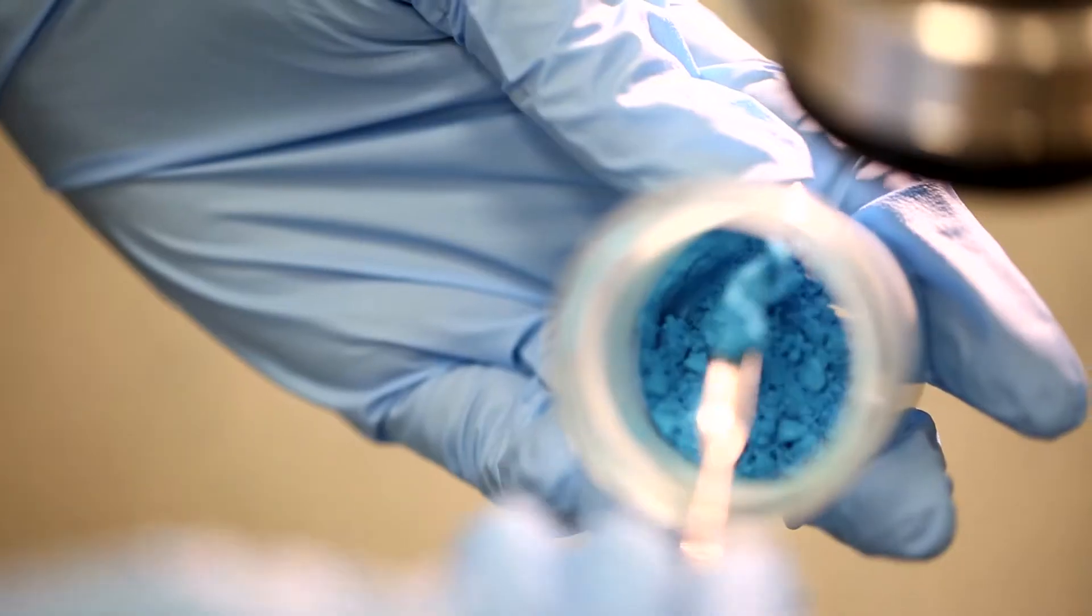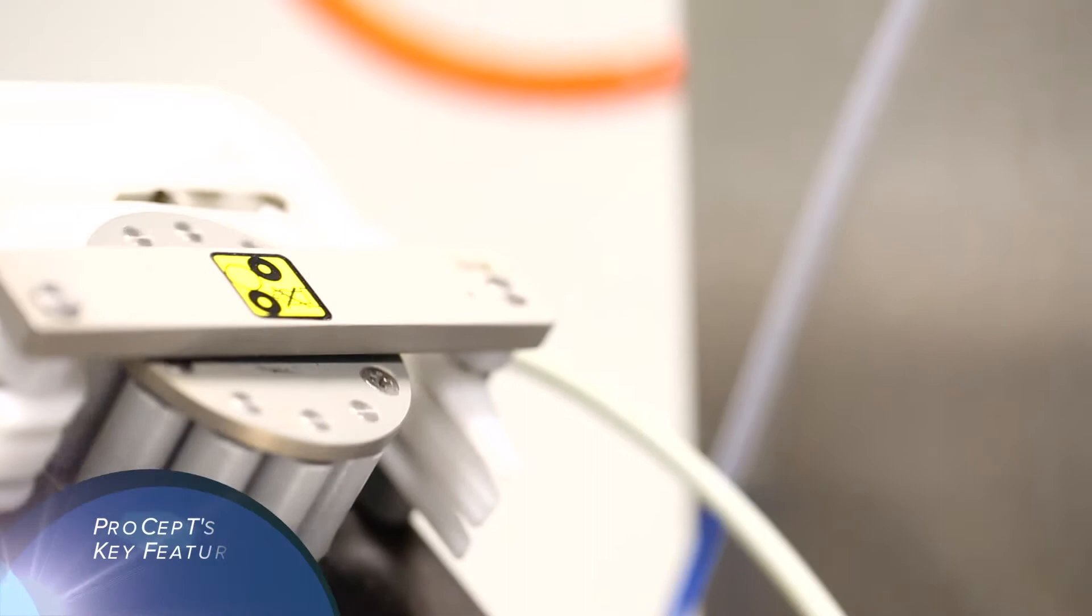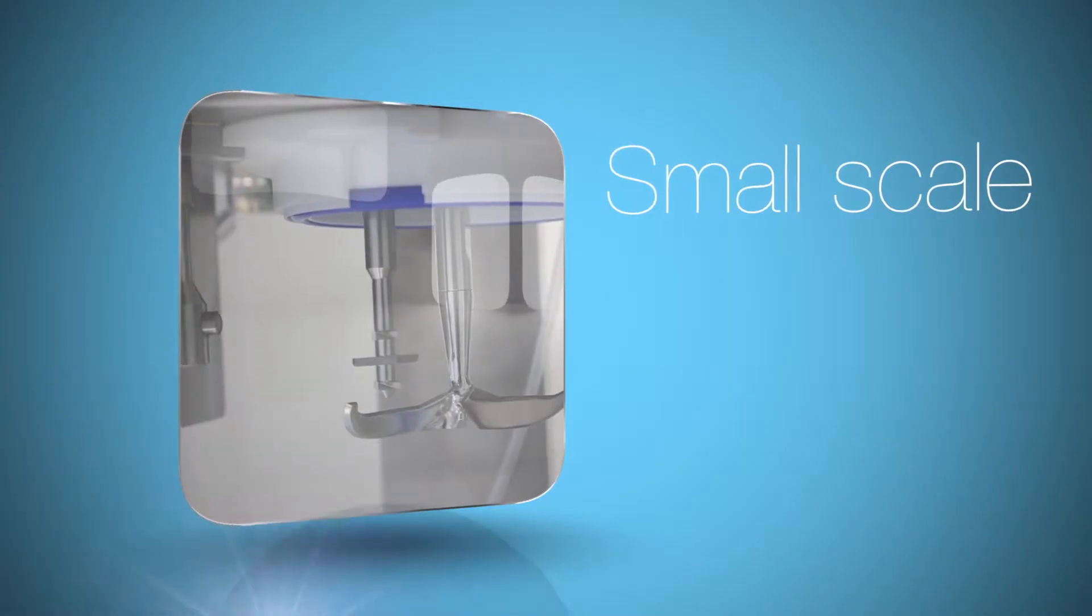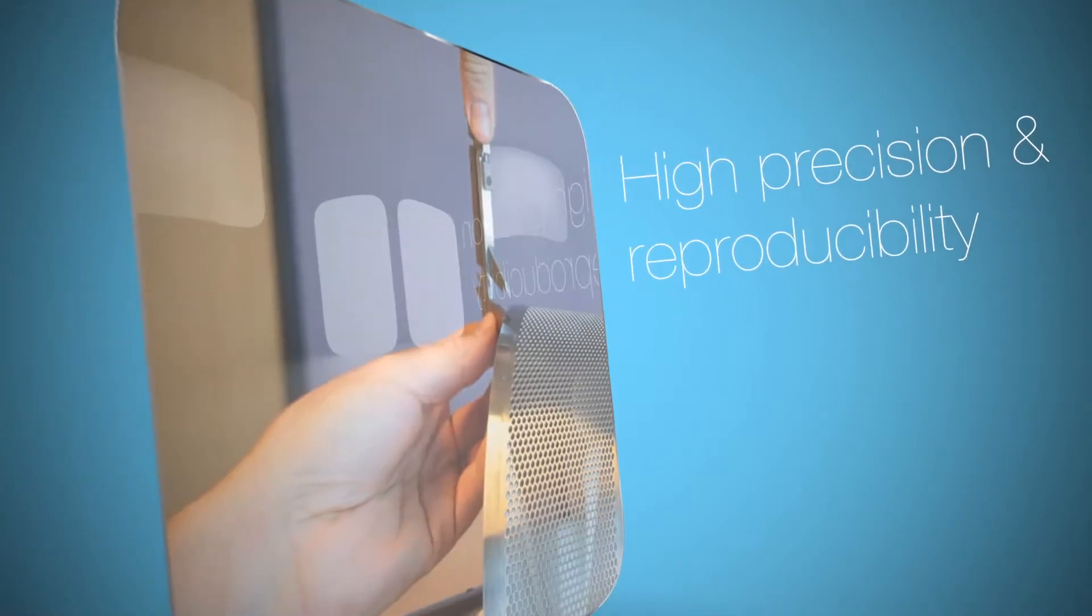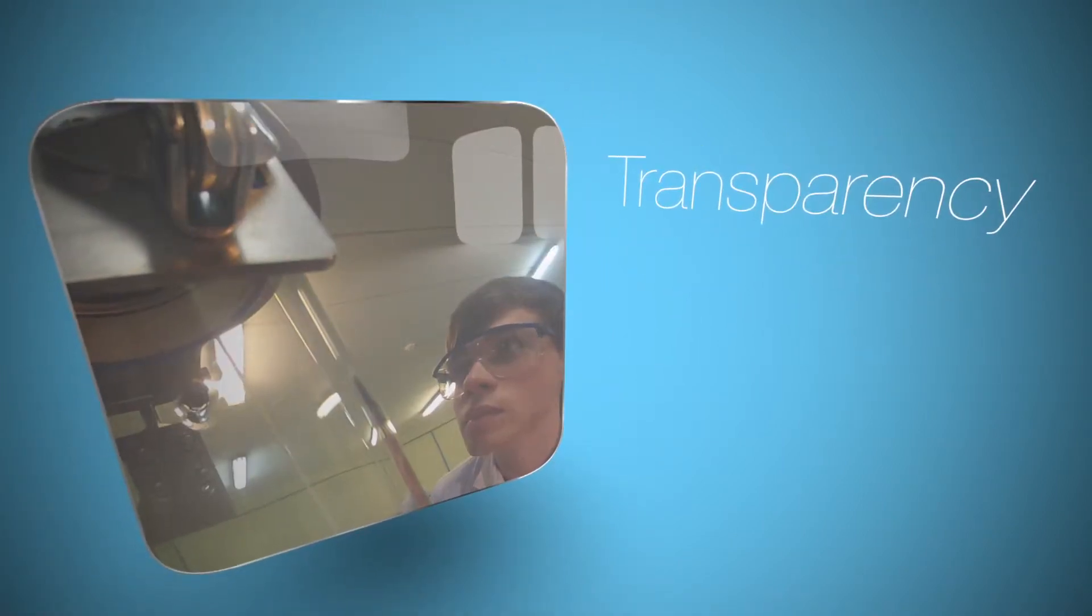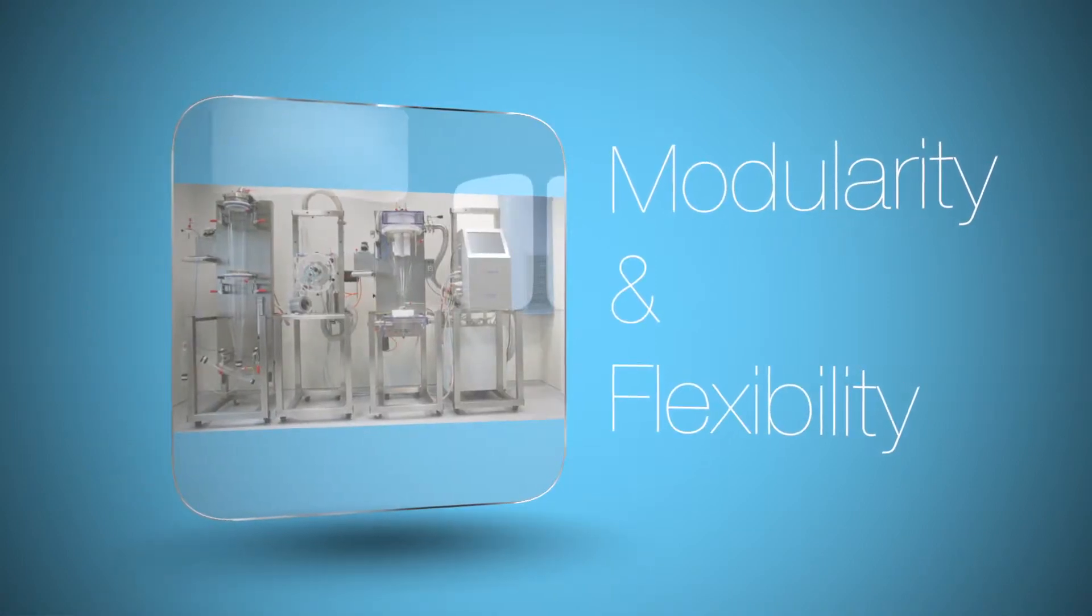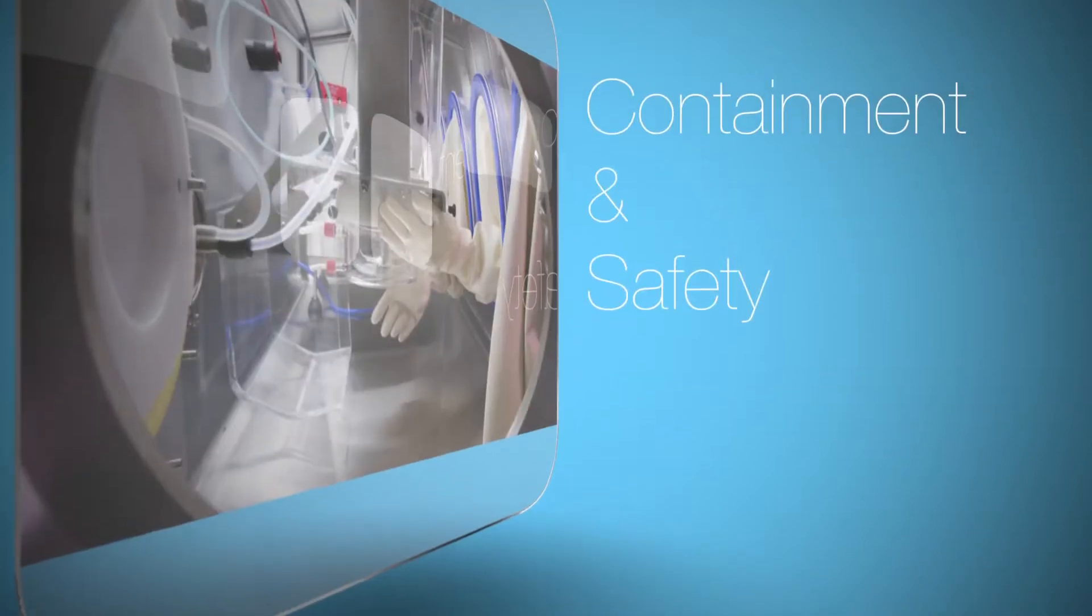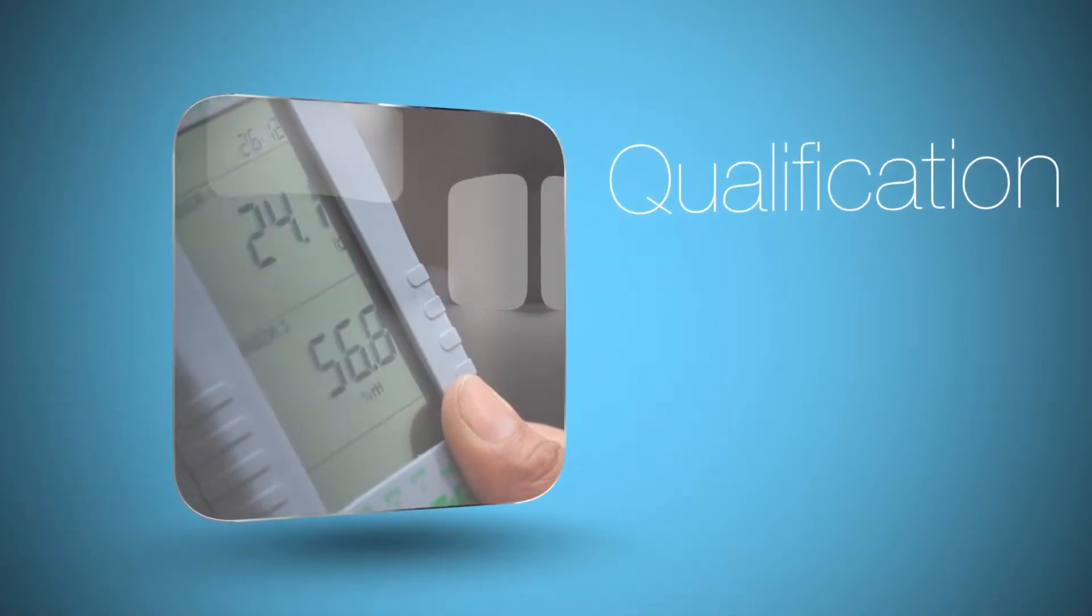Throughout Procept's complete product range, customers can rely on six key features: small scale, high precision and reproducibility, transparency, modularity and flexibility, containment and safety, and qualification.